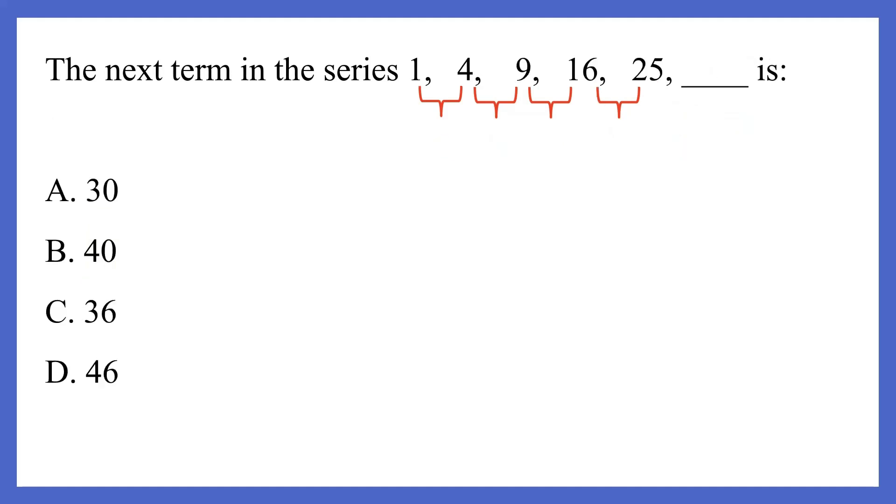Okay, the next question, the series is 1, 4, 9, 16, and 25. So just by looking at these numbers, you would probably have guessed that they are squares. These are the squares of numbers. 1, the square of 1 is 1, the square of 2 is 4, 3 square is 9, 4 square is 16, 5 square is 25.